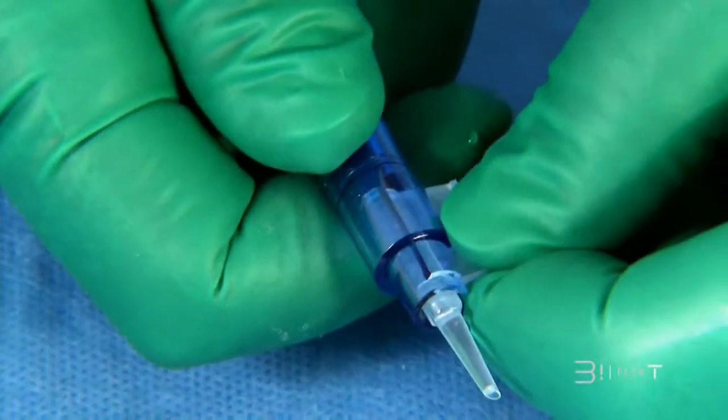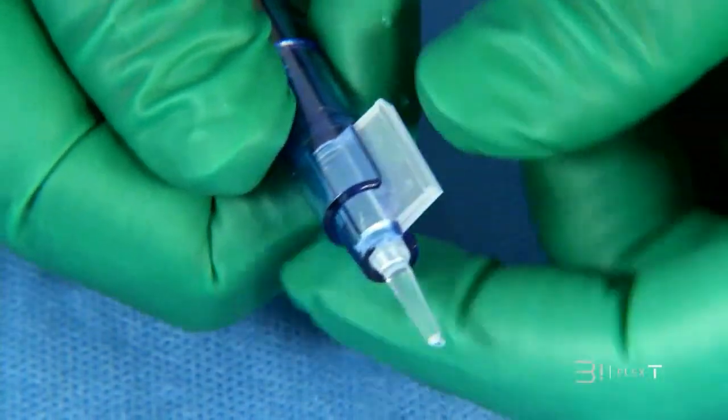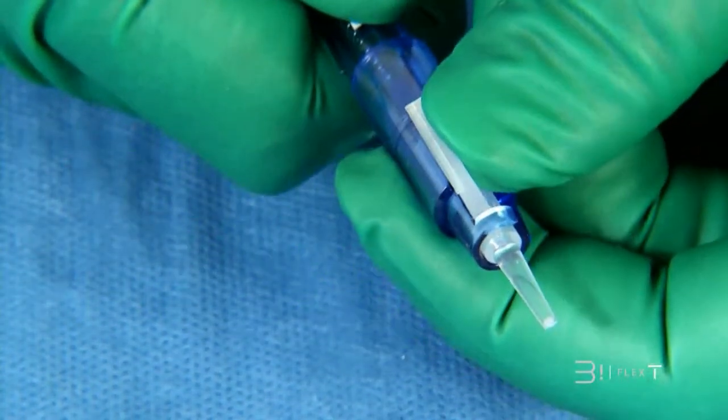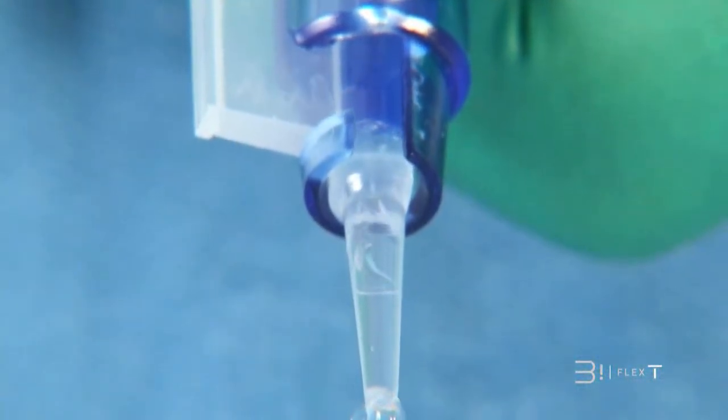Insert the cartridge into the injector. Check that the implant can move without any constraints within the cartridge before inserting the injector into the capsular bag for final withdrawal of the lens.